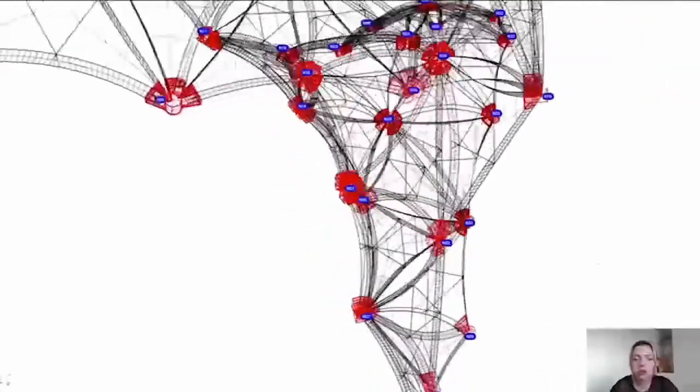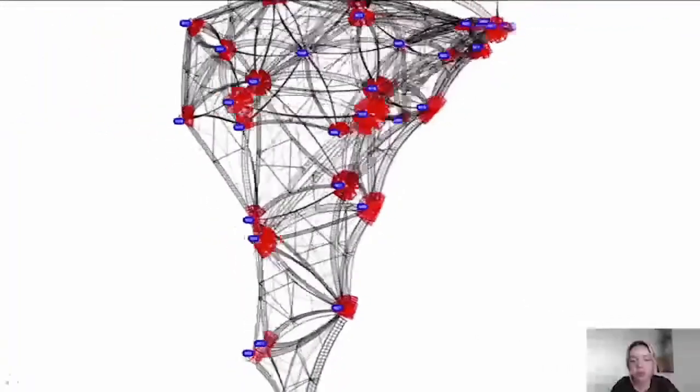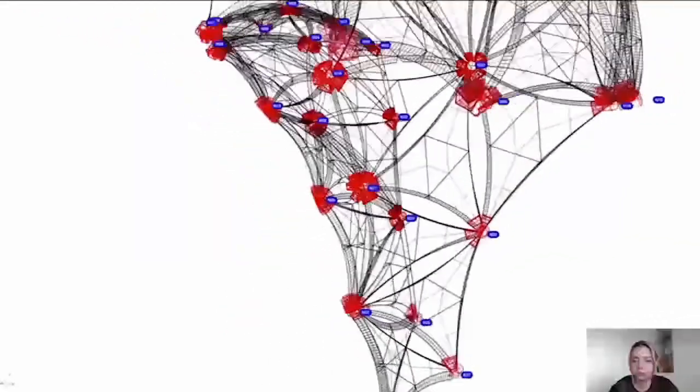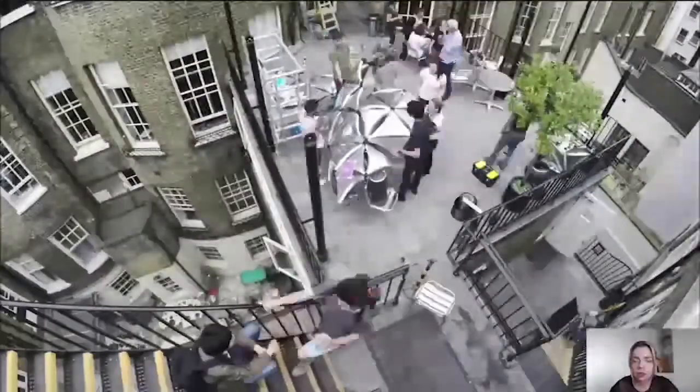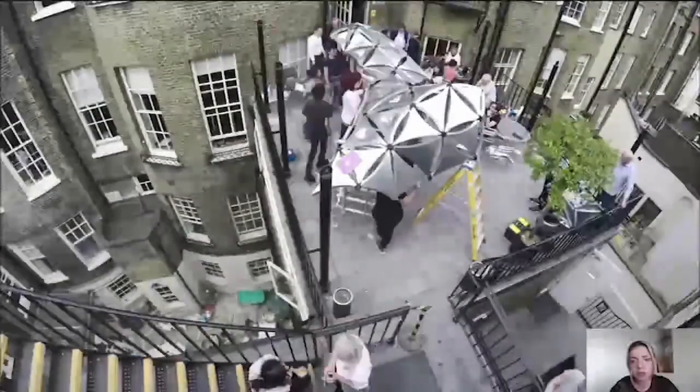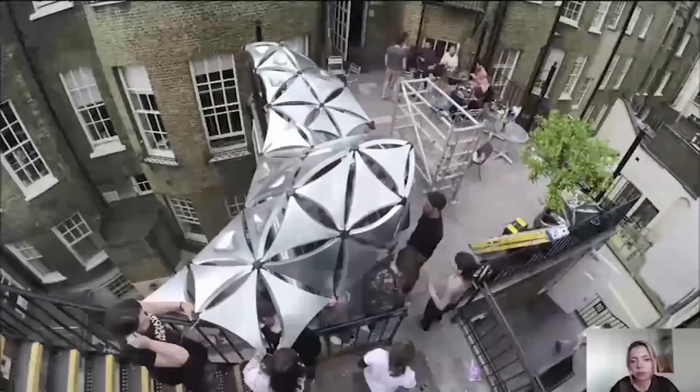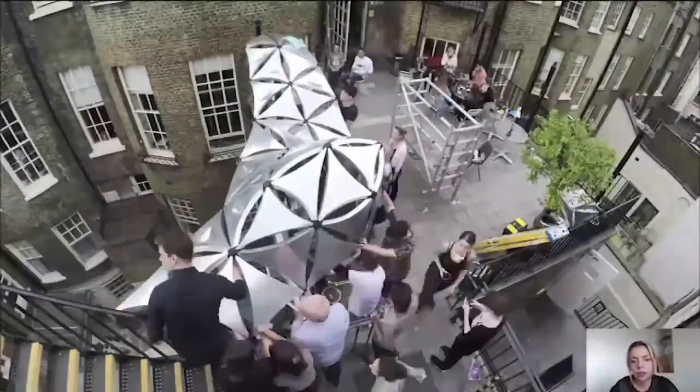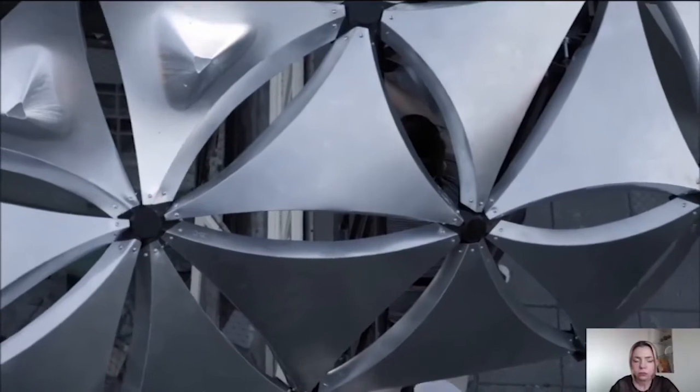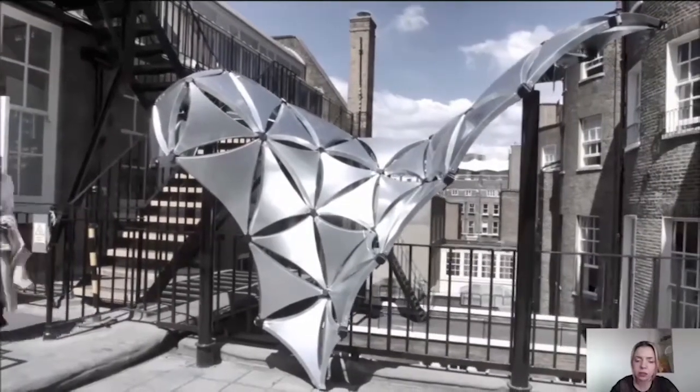And this is showing the final configuration of the global geometry with each of the components and the joints that were modeled. And this is the actual assembly process that took place at the AA premises in London on the outside terrace of VAA. This lasted for several hours, I think it was six or seven hours long. And here you can see the final configuration with the dents and the joints and everything assembled together.